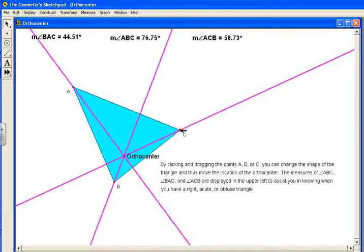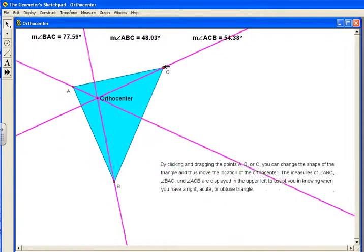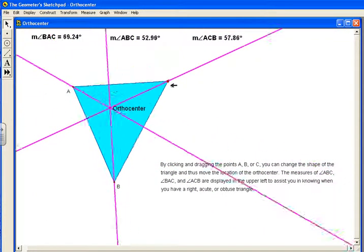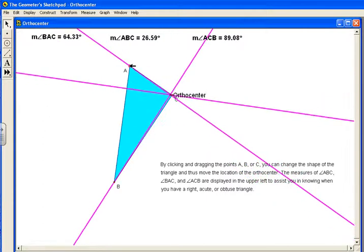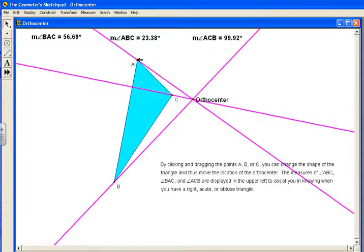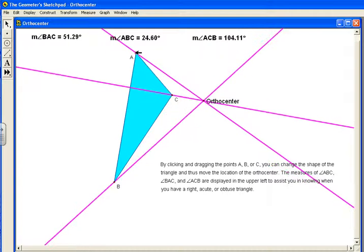So as we adjust, we can get our 90-degree angle and then come back, and each corner we can get 90-degree angles as we move things around. Notice, just like the circumcenter, if we get an angle...